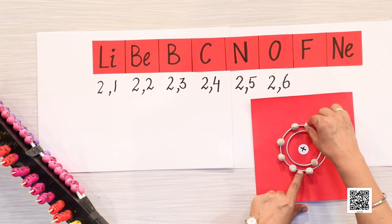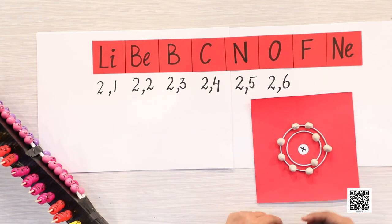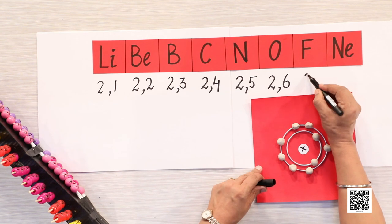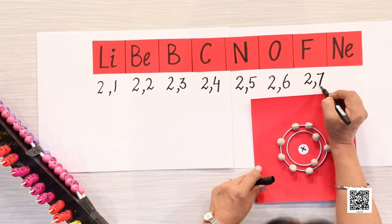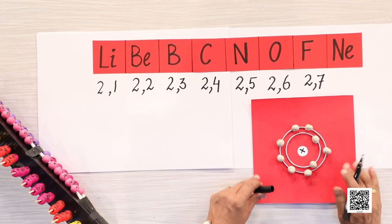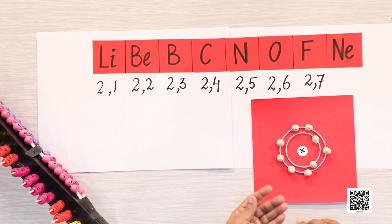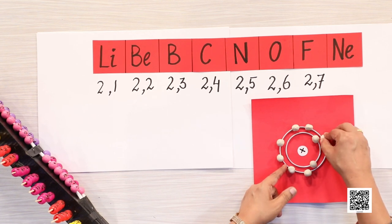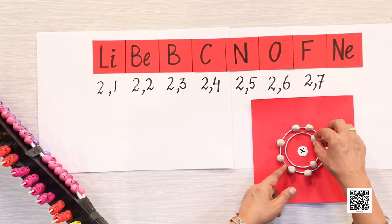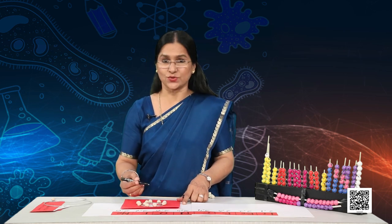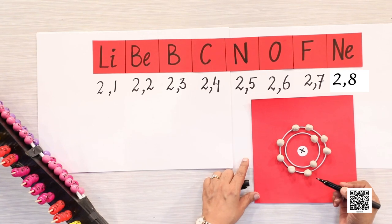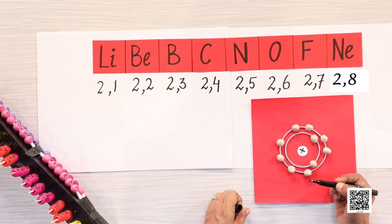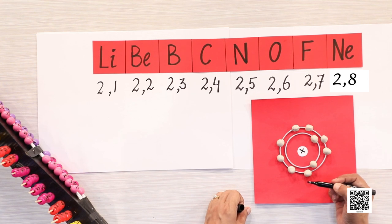Fluorine has nine electrons total: two in the first shell and seven in the outermost shell. Neon has ten electrons with eight in the outermost shell. You can also develop electronic configurations using locally available materials — you can use clay for atoms and string for rings.